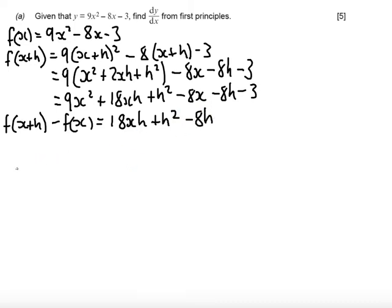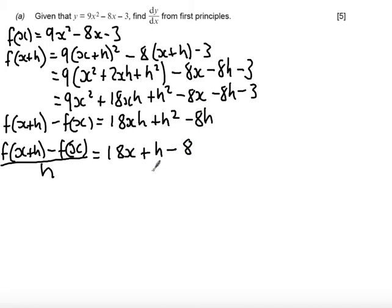Following on from this, we need to divide this result by h. So, f of x plus h minus f of x all over h. Dividing this by h means that I divide each term through by h. So, I get left with 18x on the first term, plus h in the second term, and minus 8 for the third term.